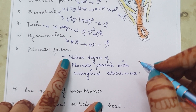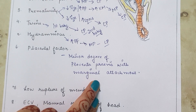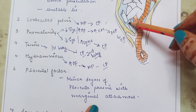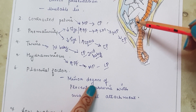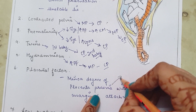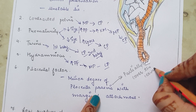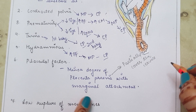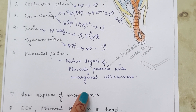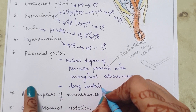Next is placental factors. Under placental factors: minor degree of placenta previa with marginal attachment. Placenta previa is when the placenta is attached at the lower uterine segment covering the cervix. In a minor degree, the placenta partially covers the cervix, plus there is a marginal attachment of the umbilical cord — the cord attaches at the margins of the placenta. In cases of a long umbilical cord, there are also chances of cord prolapse.